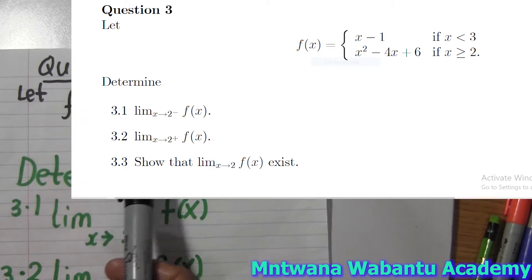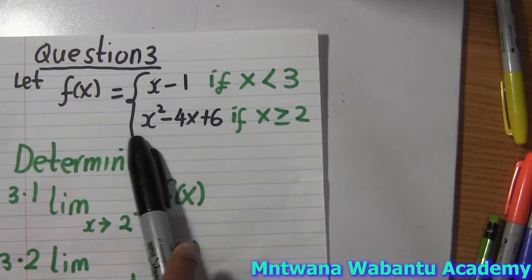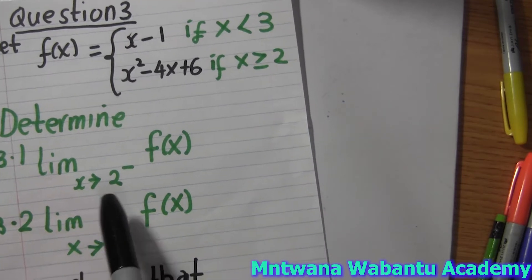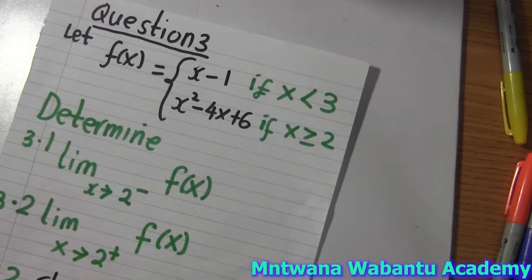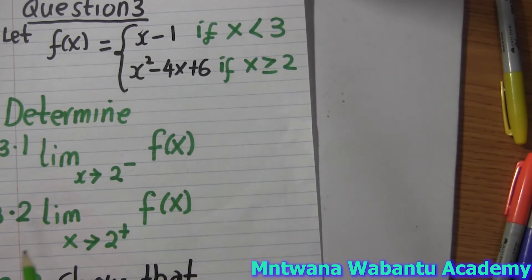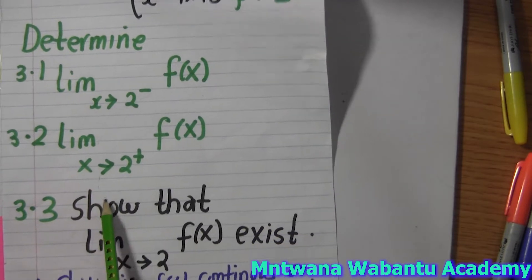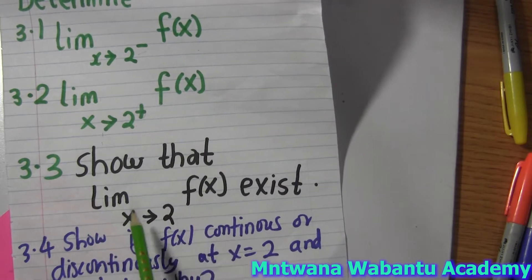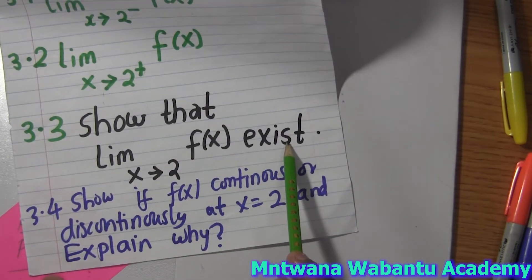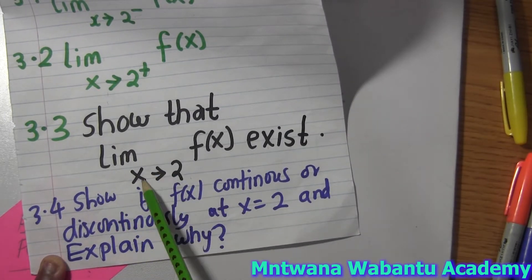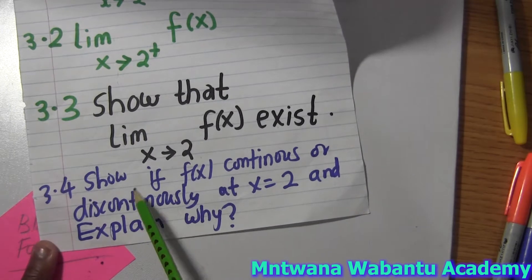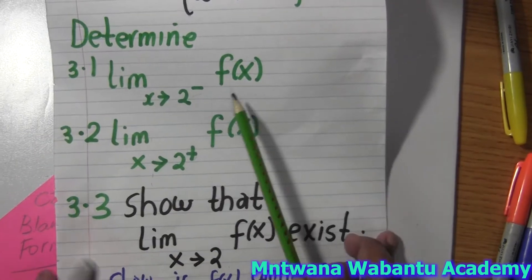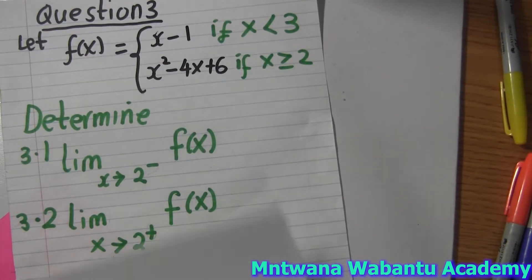Now let's go. Question number three: they say let f(x) equal to x minus 1, a piecewise function which has a linear piece and a quadratic piece, where x is from less than 3. We need to determine the limit as x equals 2 from the left, and the limit as x equals 2 from the right. Then we must show that the limit of f(x) exists, and finally whether the function is continuous or discontinuous at x equals 2, and explain why.